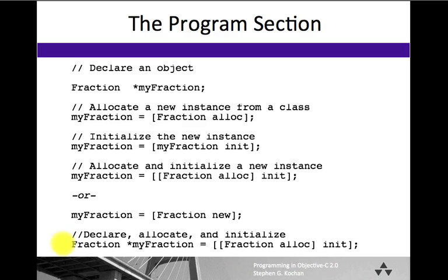In this case here, which is the last example in this section, and this is also frequently done in programs, we declare myFraction to be a fraction object and we go ahead and allocate and initialize the fraction object at the same time. So this is a single line that combines the declaration, the allocation,